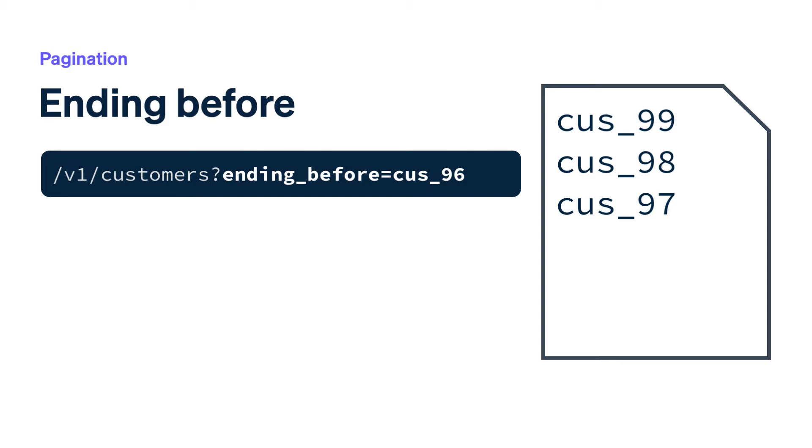As we go through each language, you'll see examples of how these parameters are used with cursor-based pagination, and how that compares to auto-pagination.